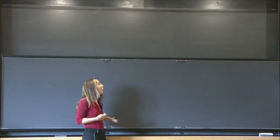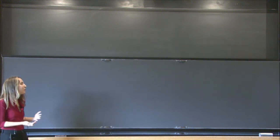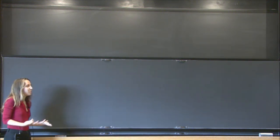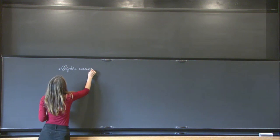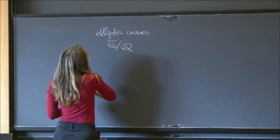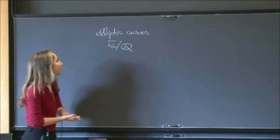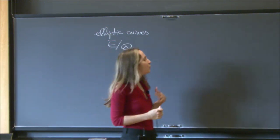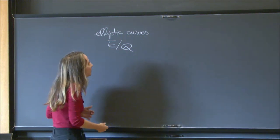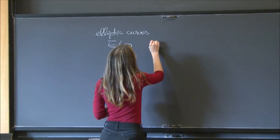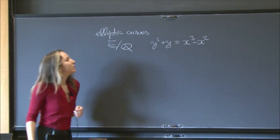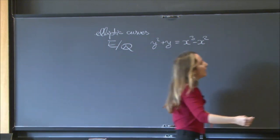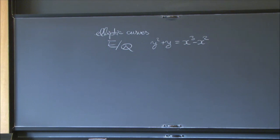One very famous example is the statement that all elliptic curves are modular. Elliptic curves can be thought of as number-theoretic or arithmetic objects. Take an elliptic curve E over Q — that's going to be a proper smooth curve of genus one, and up to removing a point at infinity it's given by a polynomial equation. This is our number-theoretic object.